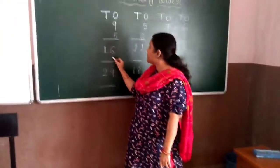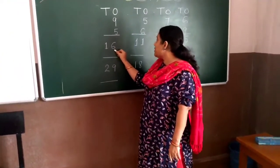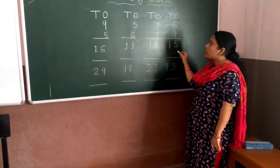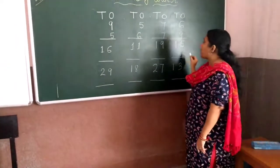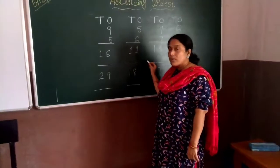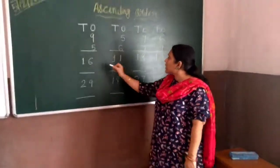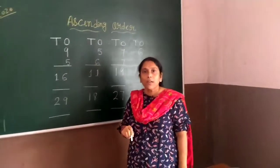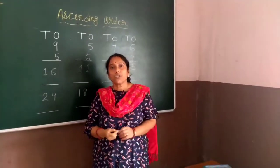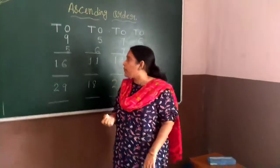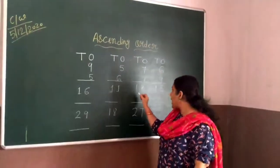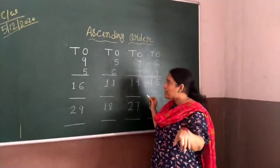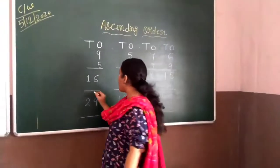Again I have written here 16, 11, 19, and 15. You have to arrange the numbers from smaller to bigger. Can you tell me which one is the smaller number? Think about it — 16, 11, 19, or 15? Yes, you are right — 11 is the smaller number.